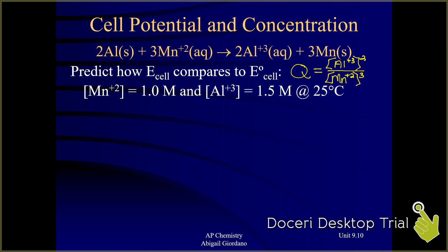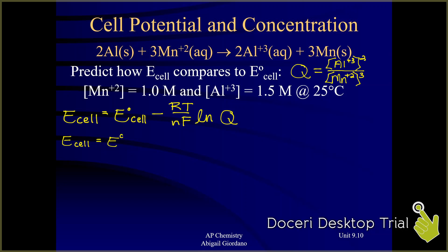We're not actually being asked to calculate a number because we don't know what the standard E cell is. We're just asked to predict: will this new cell potential be less than, greater than, or equal to standard? We're going to use the Nernst equation. Let me rewrite it. We don't know the new cell potential or the standard cell potential, but let's fill in what we can. R is 8.314, T is 298 Kelvin, n is 6 electrons canceled out, and then Faraday's constant.